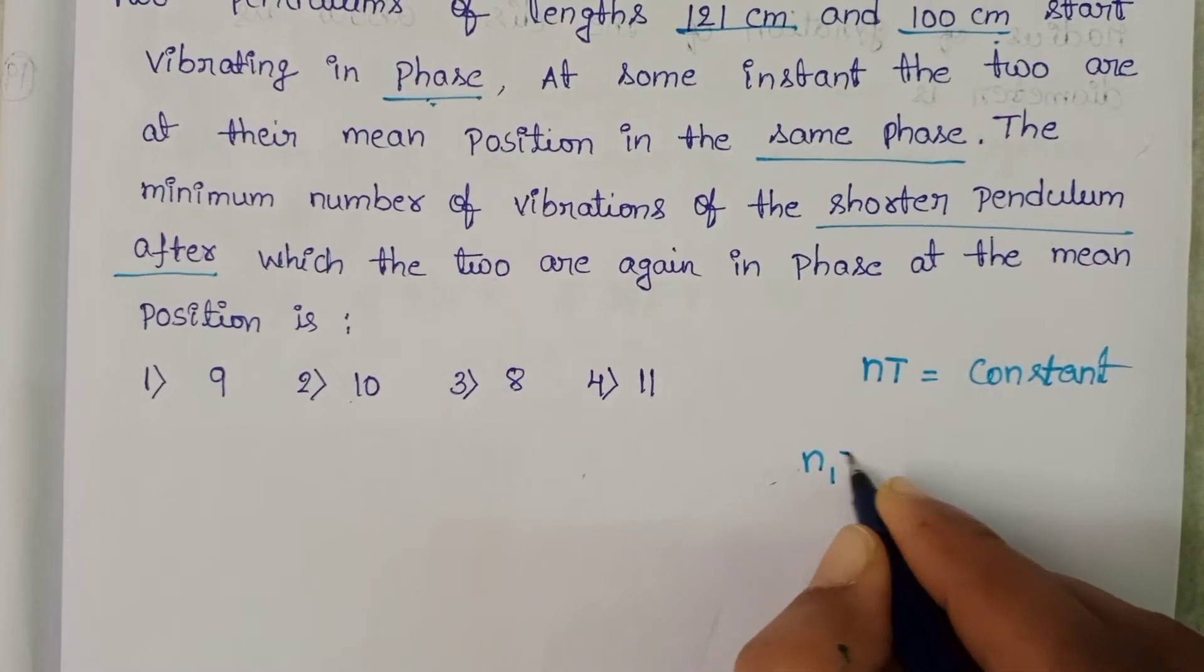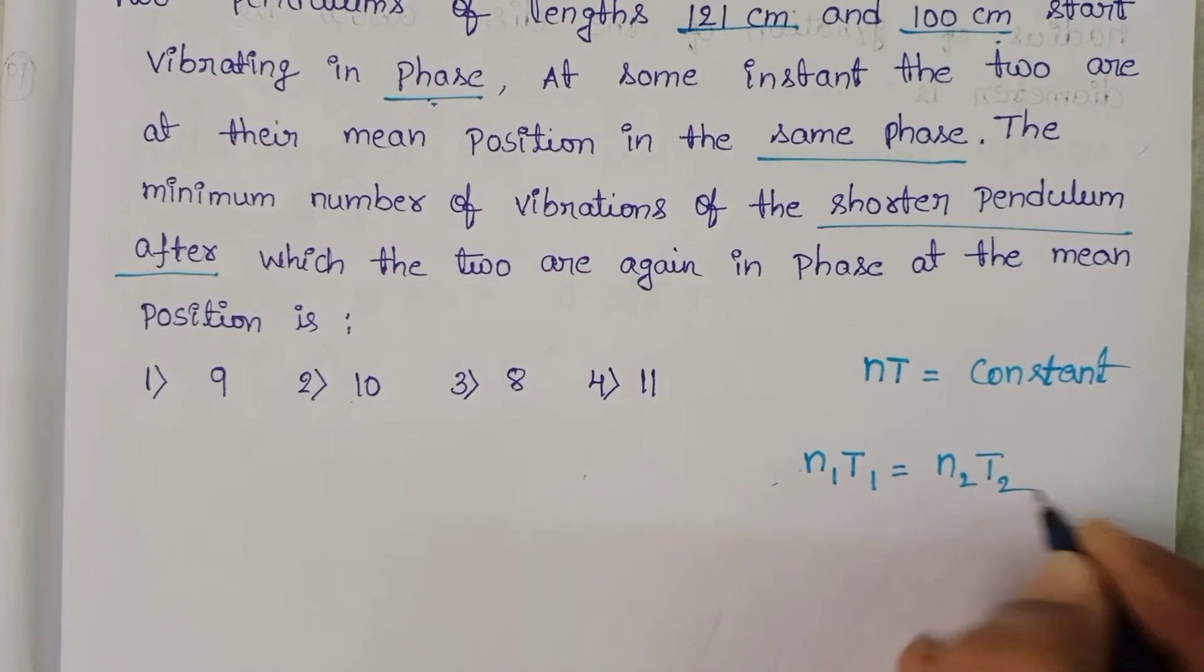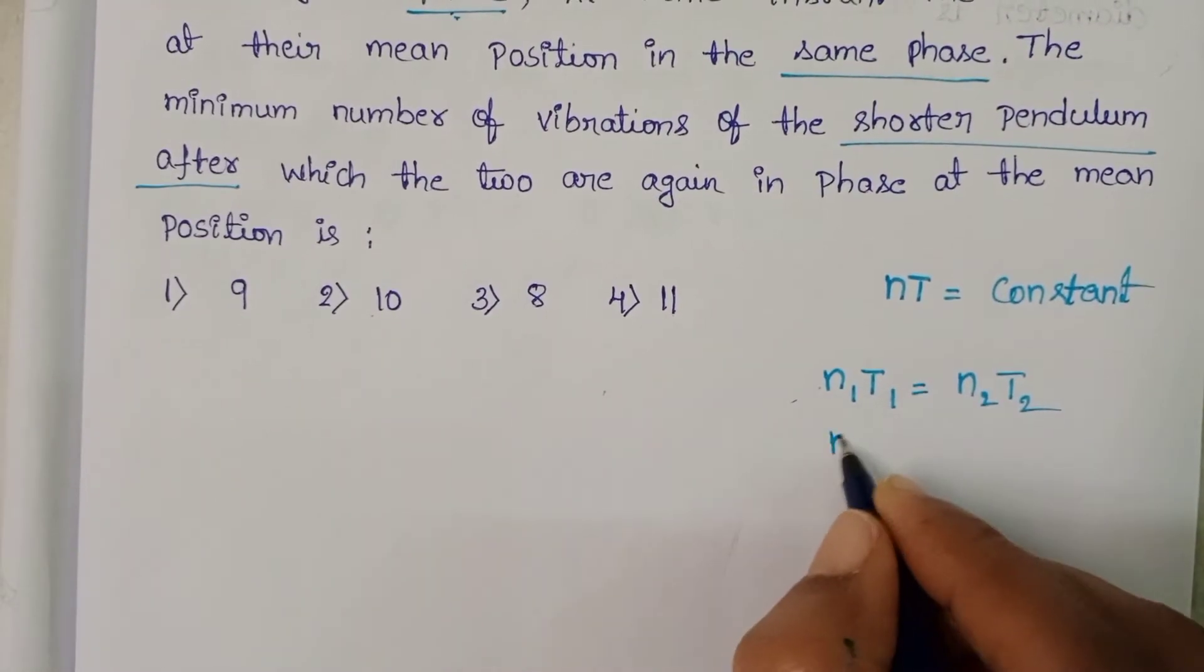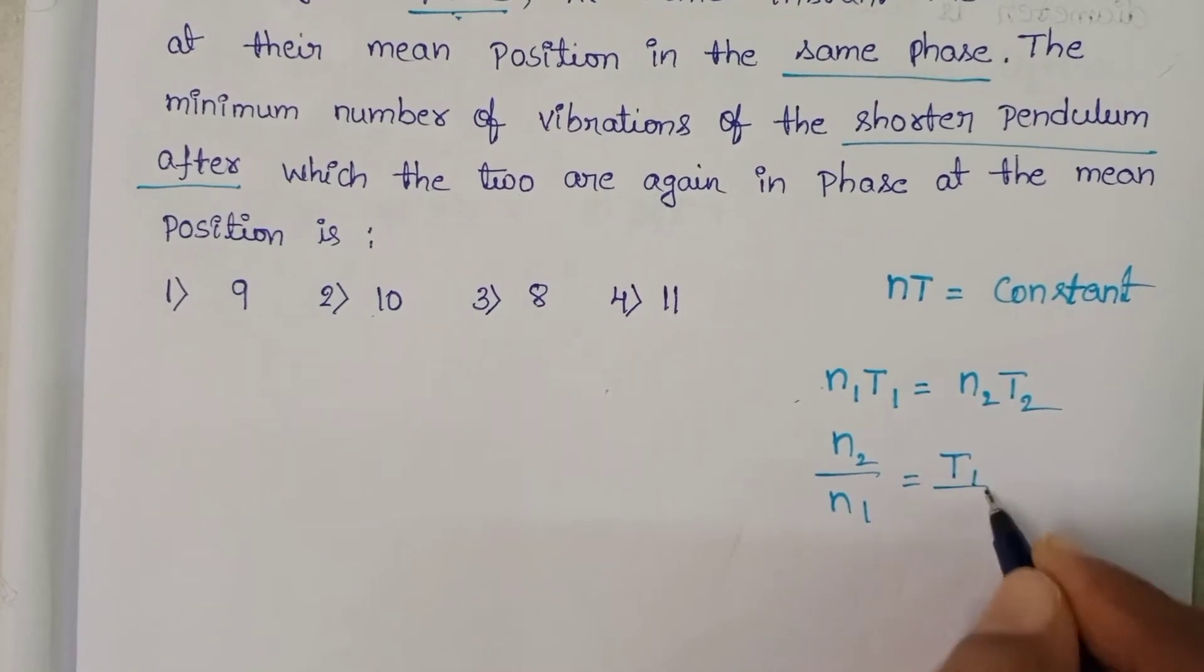So for the two pendulums, whenever in same phase, N1*T1 equals N2*T2. And from this, N2 by N1 equals T1 by T2.